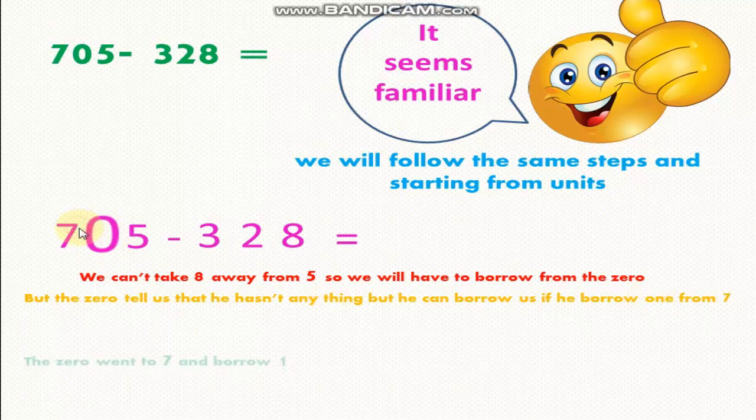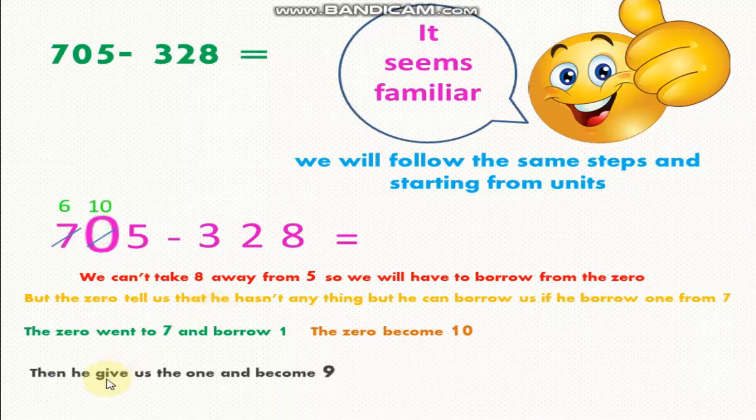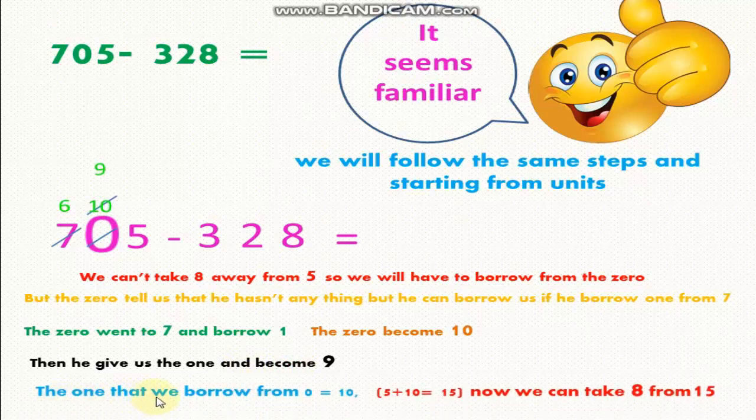0 will borrow 1 from 7. The 0 went to 7 and borrowed 1. We will take 1 from 7, so 7 became 6. The 0 became number 10. Then it gave us the 1 and became number 9. The 1 that we borrowed from 0 equals 10. 5 plus 10 equals 15. Now we can take 8 from 15.